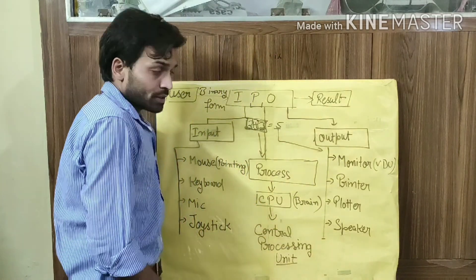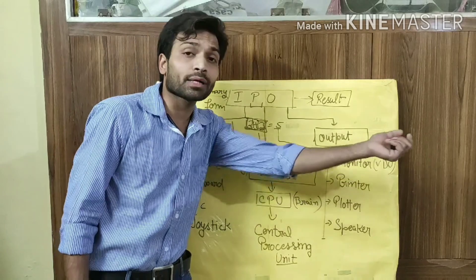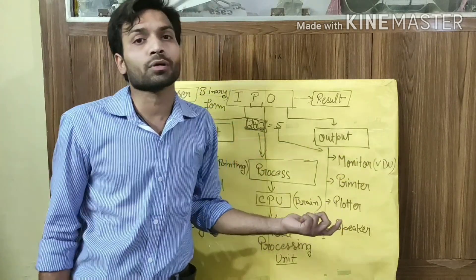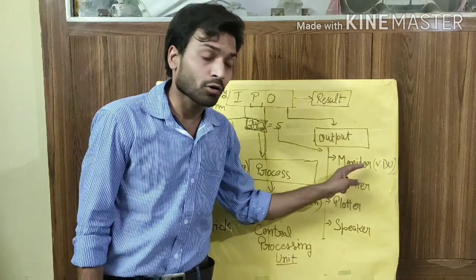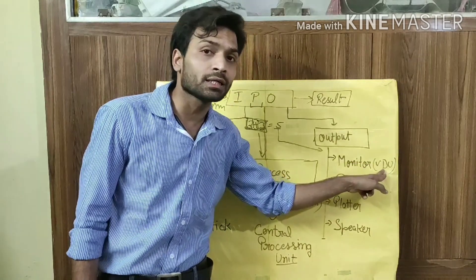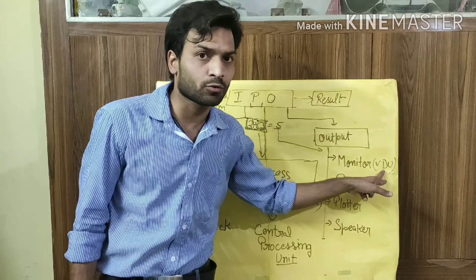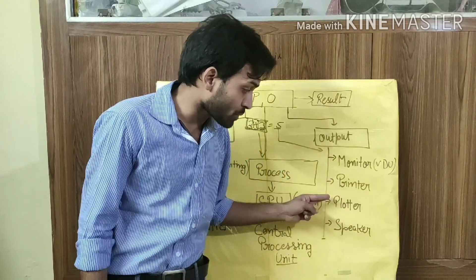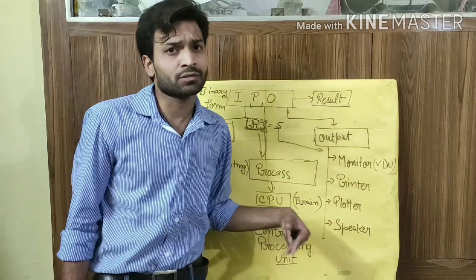The result is shown by the output devices. The most common output device is the monitor, also known as the visual display unit. Some other output devices include printer, plotter, speaker, and so on.